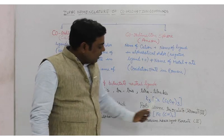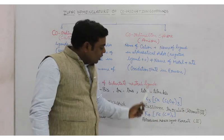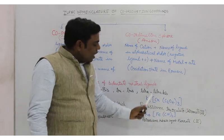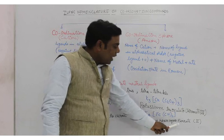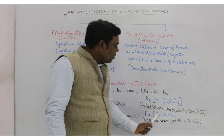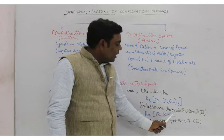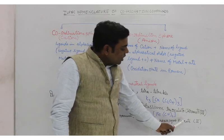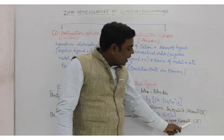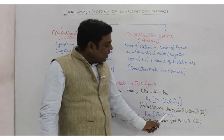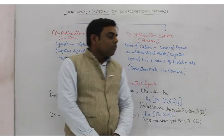Next, K4[Fe(CN)6]: the coordination sphere is again an anion. We first write potassium, then hexa — cyanide becomes cyano — so hexacyano. For iron, since the complex is anionic, we use '-ate' and write ferrate. The oxidation state is +2, so the full name is potassium hexacyanoferrate(II).